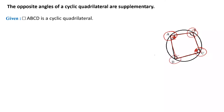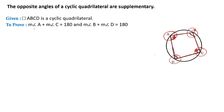We have to show that the sum of opposite angles is 180 degrees. That means angle A plus angle C equals 180, and angle B plus angle D equals 180. Now we will go for the proof.